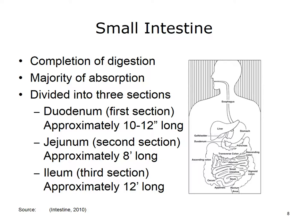The duodenum is the first section. It is about 10 to 12 inches long, shaped like a C, and begins at the stomach and ends at the jejunum. The jejunum is the second section and is about 8 feet long. The jejunum repeatedly twists and turns in the abdominal cavity. Digestion continues in the jejunum as the chyme is slowly moved along for several hours. The ileum is the third section, about 12 feet long. It is in the ileum that absorption of nutrients is completed. The remaining undigested materials, or waste, and water then move into the large intestine.